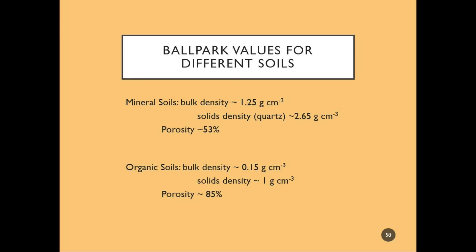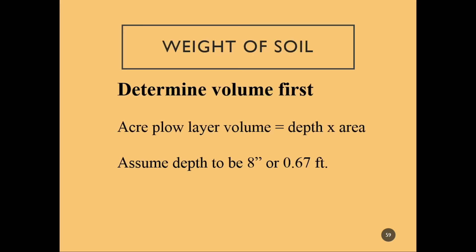For organic soils, particle density is 1.0 g/cm³ and porosity is approximately 85%. These are ballpark values to give an idea of the difference between mineral and organic soils.